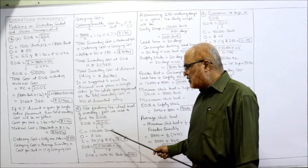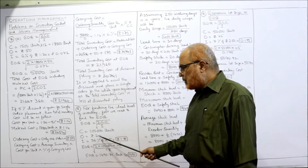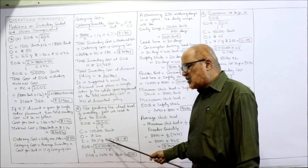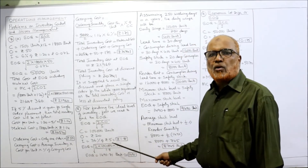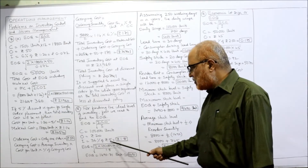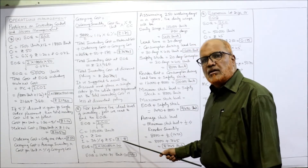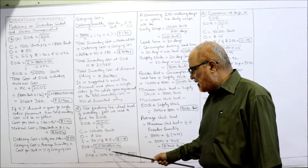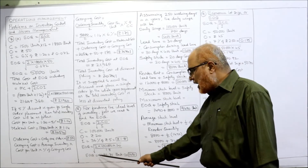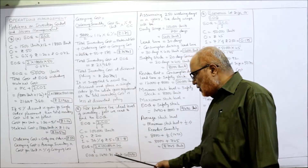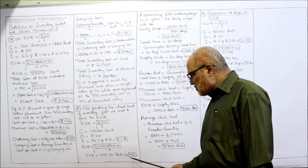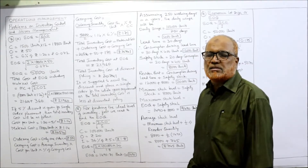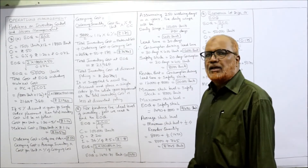Annual consumption is 1 lakh units. Ordering cost per order is 20 rupees. Carrying cost is 36% of cost per unit; the cost per unit is 5 rupees, so 36% of 5 equals 1.8. Substituting: EOQ equals square root of 2 into 1,00,000 into 20 divided by 1.8, which comes to 1490.71, approximately 1490 units.